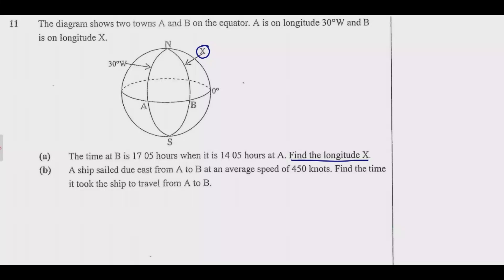To answer this question we use the fact that one hour is equivalent to 15 degrees. So one hour difference is equivalent to 15 degrees difference. Given that at A the time is 14:05 hours and at B the time is 17:05 hours, meaning at B the time is ahead of A. Let us find the time difference, so time difference is 17:05 minus 14:05.